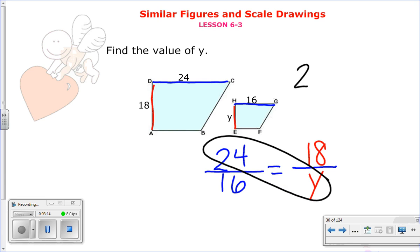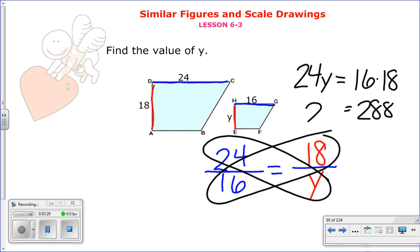And I multiply. 24 times Y is 24Y. And 16 times 18 is, if I figure this one out, 288. So I have 24 times Y is 288. I solve for Y by dividing by 24 again. And I get Y is, well, 288 divided by 24 is 12. So Y is 12 units long.